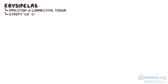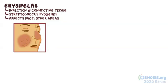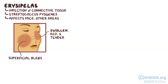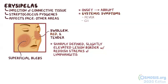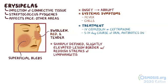Fourth is erysipelas, which involves the deeper layers of the skin and the underlying connective tissue, and is usually caused by Streptococcus pyogenes. Classically, erysipelas affects the face, but it can also occur in other areas like the lower limb. The affected skin is swollen, red, and very tender, and there can be superficial blebs. The characteristic finding is a sharply defined, slightly elevated lesion border with reddish streaks of lymphangitis. The onset is usually abrupt, and there are often systemic symptoms like fever and chills. Treatment includes IV cefazolin or ceftriaxone with a plan to complete a 5–14 day course of oral antibiotics once the individual is stable.